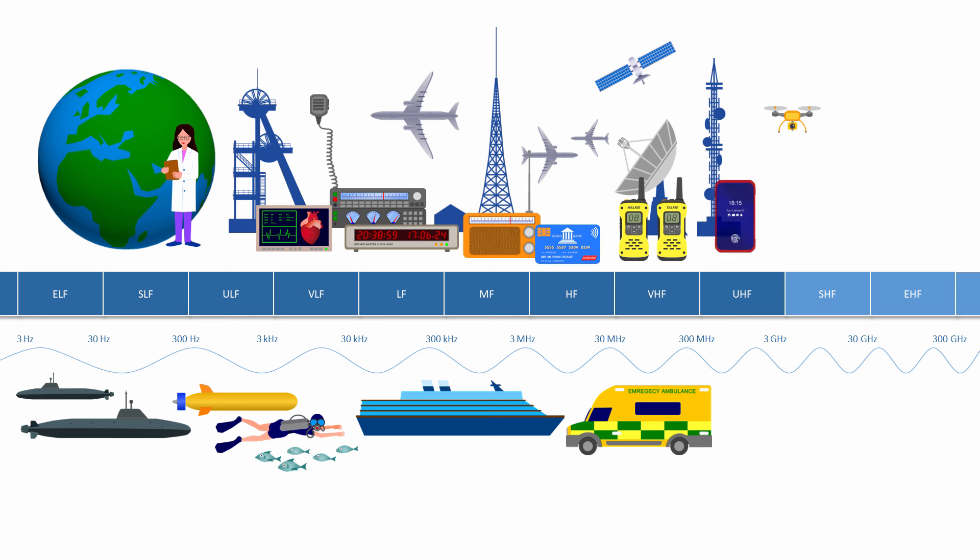Then comes the all-important ultra-high frequency band, UHF. UHF spans the 300 MHz to 3 GHz range. UHF is used in GPS navigation, commercial drones, pagers and digital television broadcasting. It's also used by mobile phone networks, or cellular networks as they are otherwise known. Specifically, the 4G mobile network in the United Kingdom operates between 790 MHz and 862 MHz. UHF is also used in Bluetooth device pairing and by Wi-Fi. Wi-Fi networks are able to operate within a range of frequencies between 2.4 GHz and 2.484 GHz.